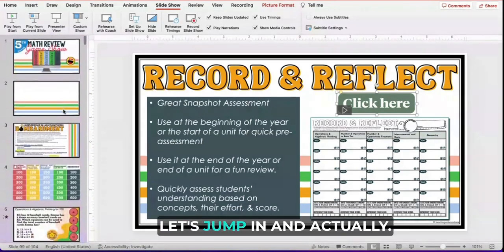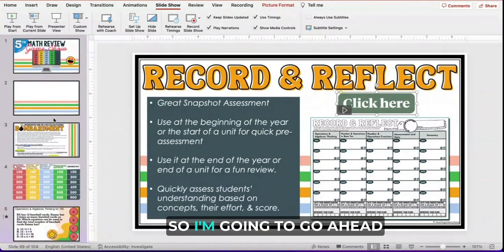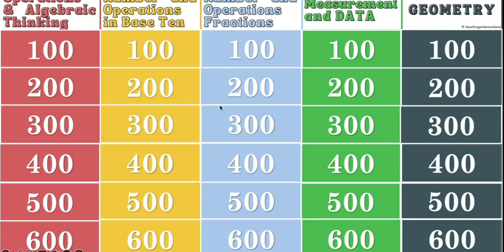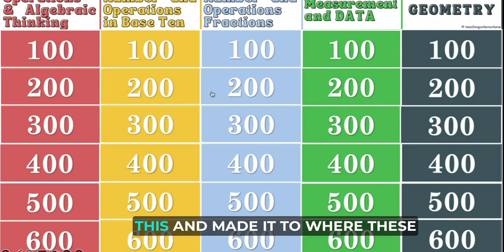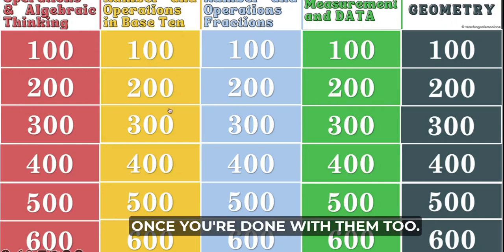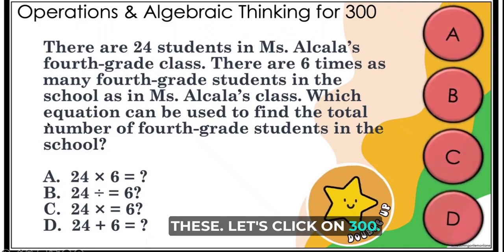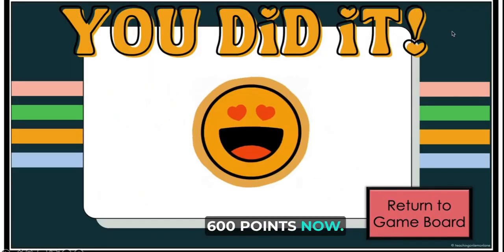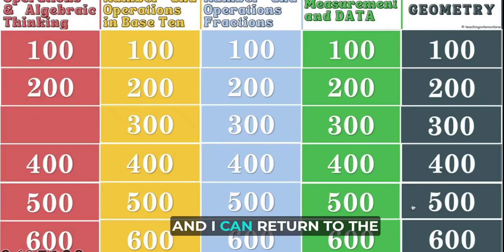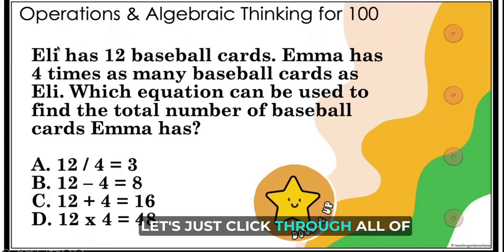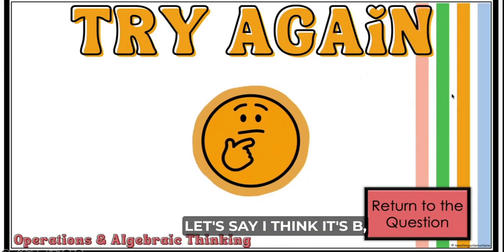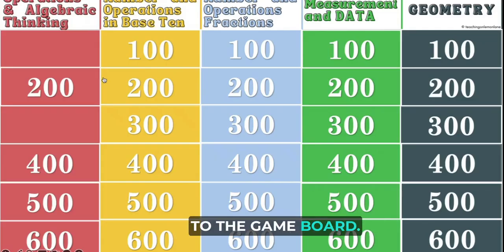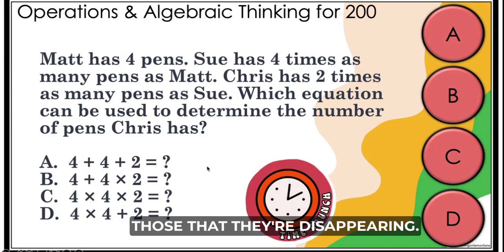Let's jump in and actually see how this functions. I'll click here and play from the instruction slide. I simply click to get to the next slide. What's so cool is that I've gone through all of this to make the questions disappear once you're done with them. Students can click on any of these — let's click on 300. You'll notice we have our double up star, which means this question is actually worth 600 points now. It says 'you did it' and I can return to the game board. You'll notice as we click through those questions that they're disappearing.